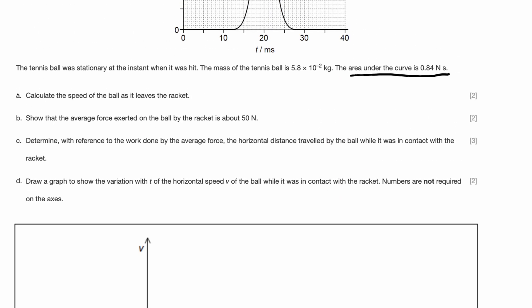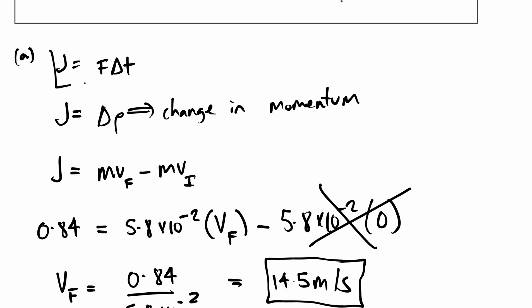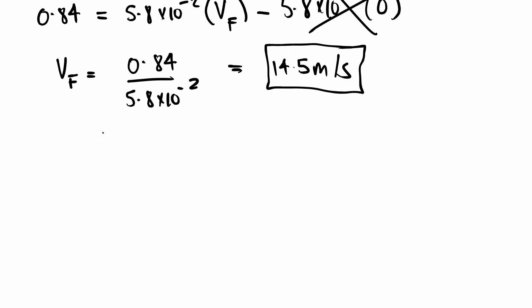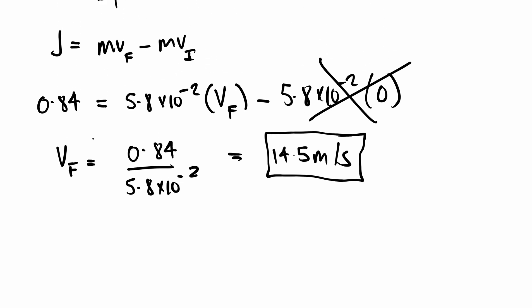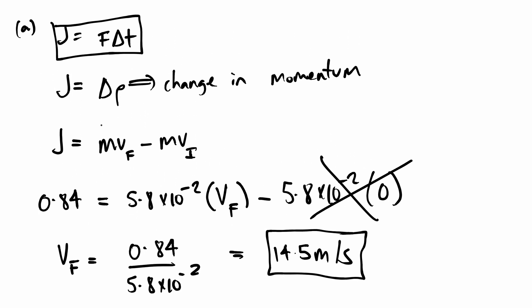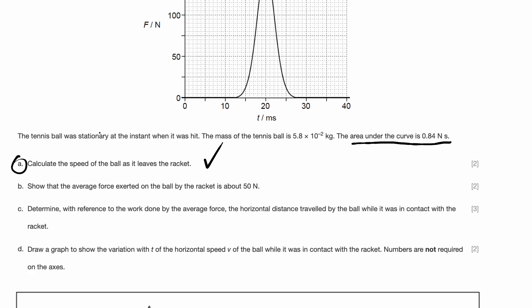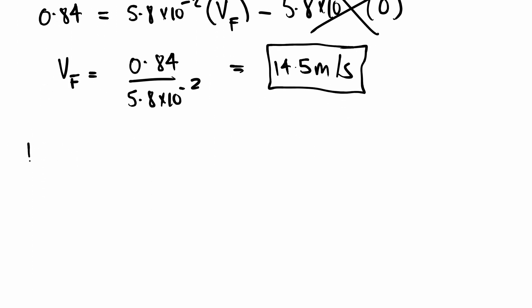What's the second question? Part B: show that the average force exerted on the ball by the racket is about 50 Newtons. Did I not say that J is equal to force into delta T that's given in the data booklet? We already identified it in the earlier question, so we can just use that.